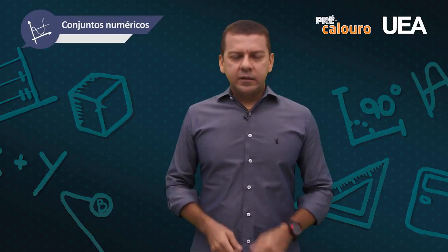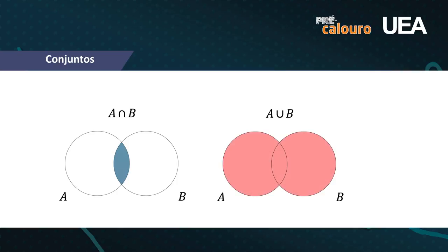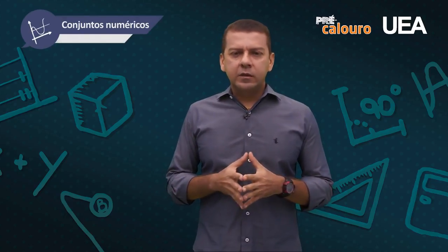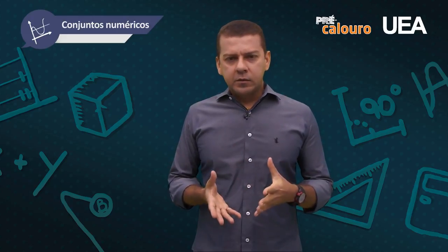As operações com conjuntos facilitam muito a partir do momento em que se conhece o diagrama de Venn, pois temos a união e a interseção de dois conjuntos. Se tenho dois conjuntos A e B que se tocam, a região compreendida entre os dois conjuntos chamamos de interseção, representada por A ∩ B. Todos os elementos — parte somente de A, parte somente de B e a parte comum — chamamos de união, representada por A ∪ B.